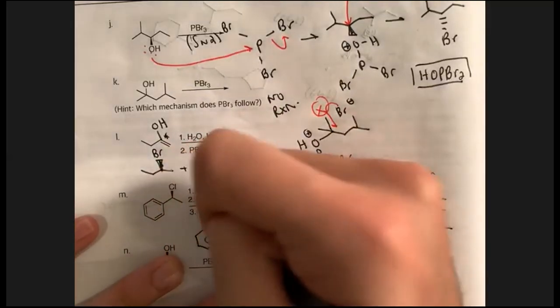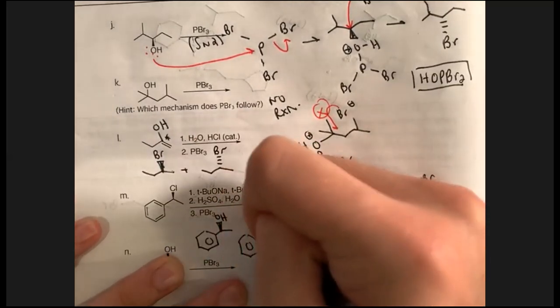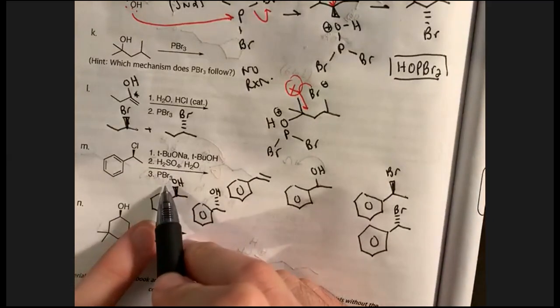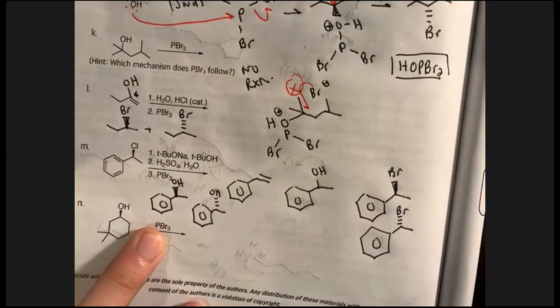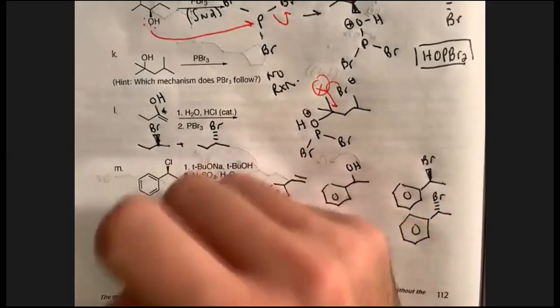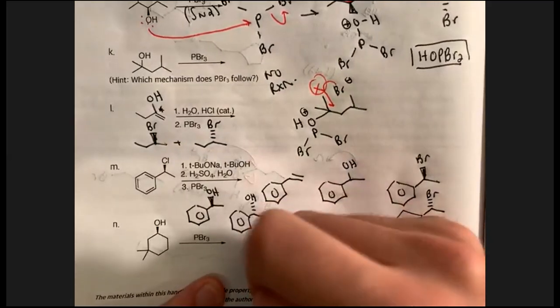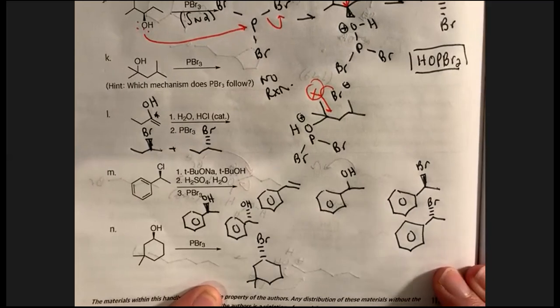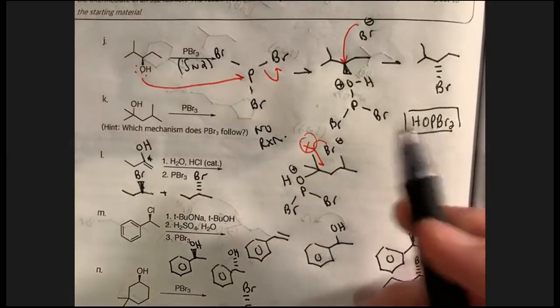After step two you get two products — both the wedge and dash alcohol — since it went through a carbocation. Both of those can react with PBr₃, and since it's SN2 with inversion, that's why you get both alkyl halide enantiomers. For letter N, the same mechanism applies: the alcohol gets the big PBr₂O leaving group, then bromide attacks in an SN2 reaction. Always know this mechanism — it's literally always tested.